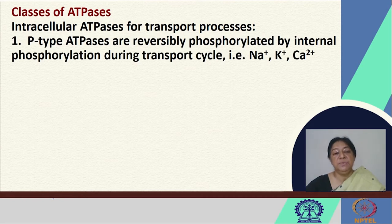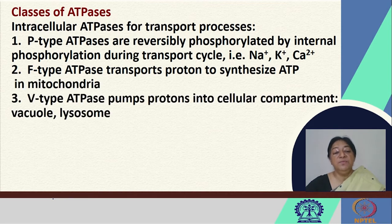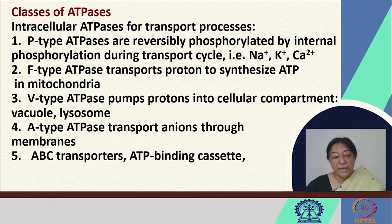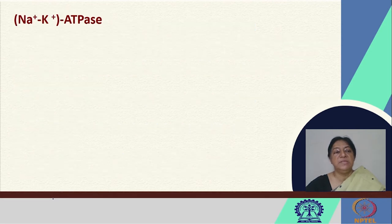There are different types of ATPase associated with transport processes depending on the ions they transfer. P-type ATPases are reversibly phosphorylated by internal phosphorylation during the transport cycle of potassium, sodium, or calcium. F-type ATPases transport protons in mitochondria. V-type ATPase pumps protons into cellular compartments. A-type ATPases transport anions, and ABC transporters — ATP-binding cassette proteins — transport ions, small molecules, lipids, and drugs across membranes.